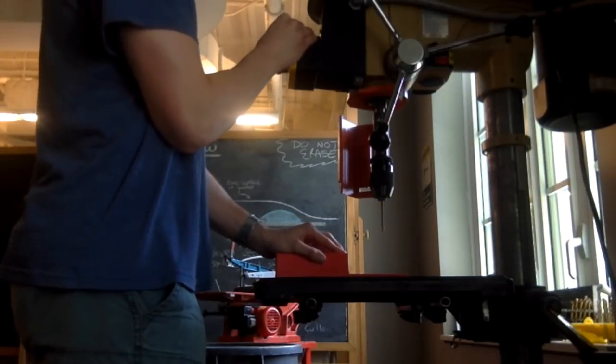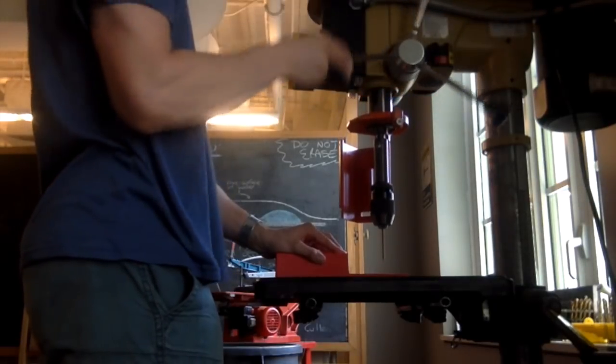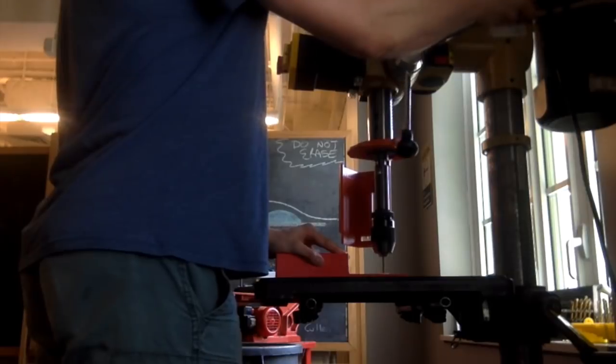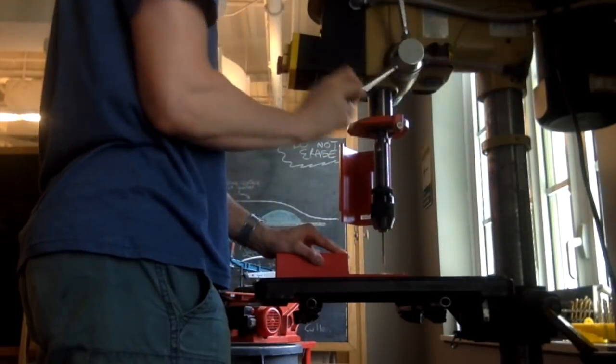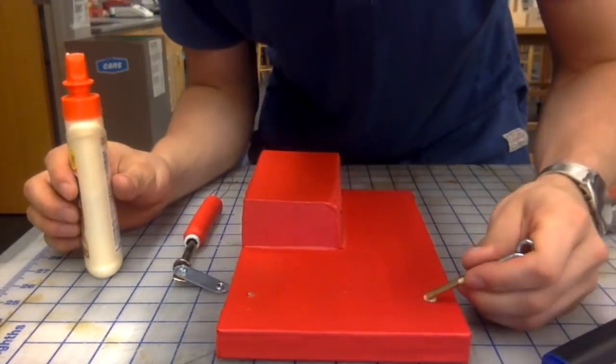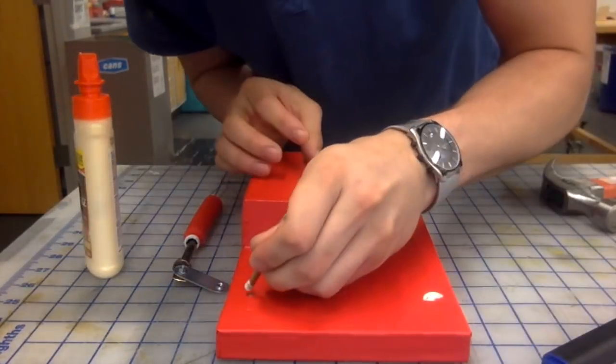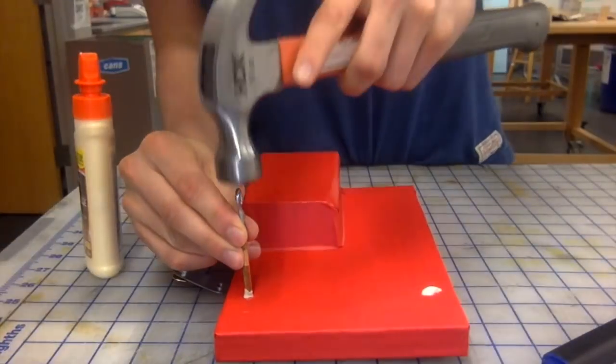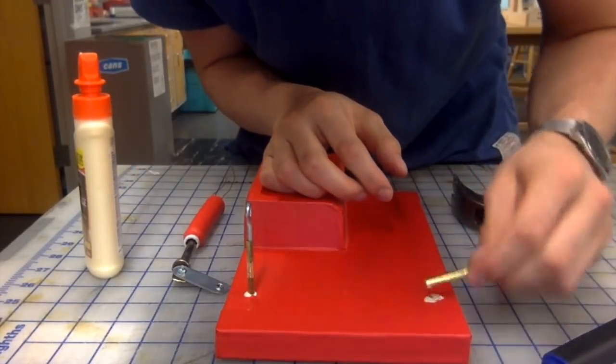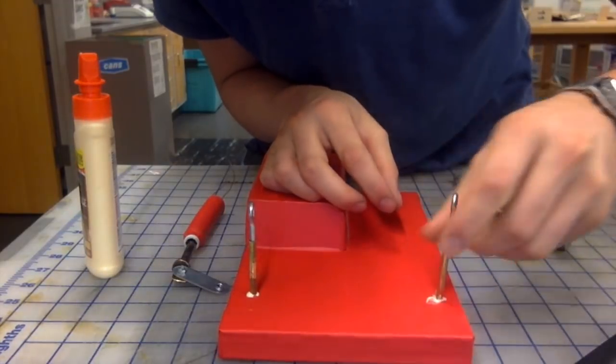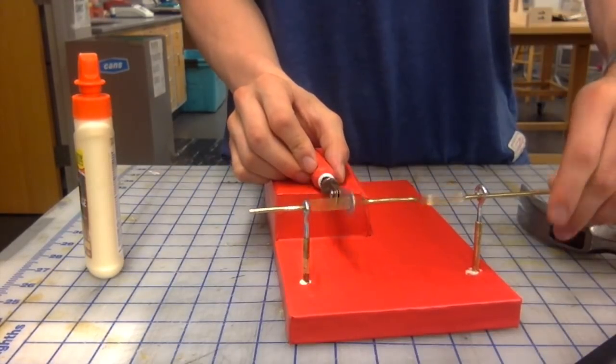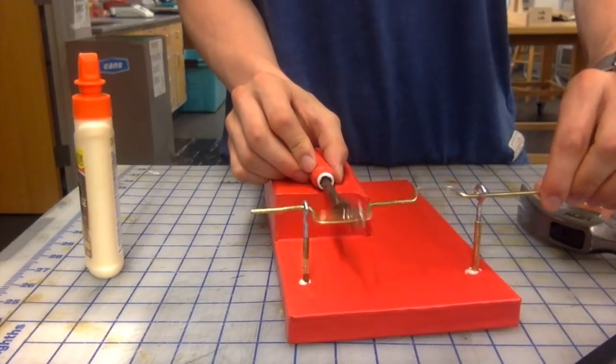Now, I drill holes into the frame for the crankshaft axles. And then glue and hammer the axles into place. A quick test with the crankshaft shows the axles are doing their job.